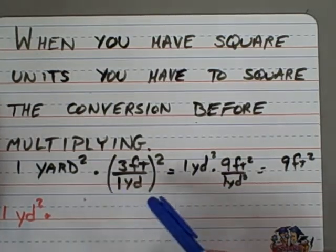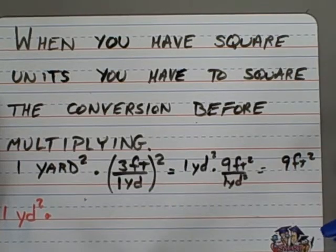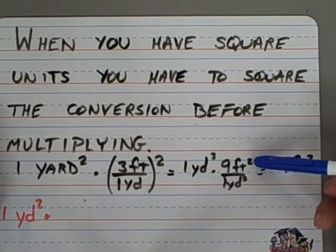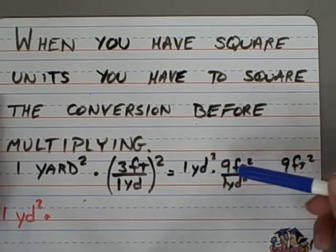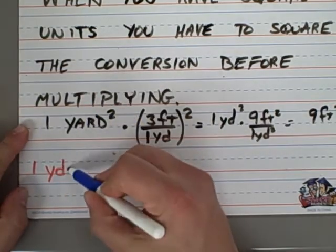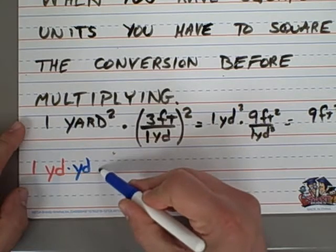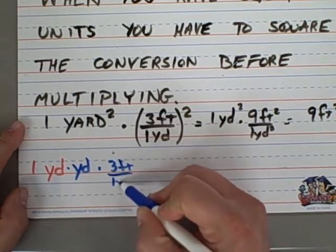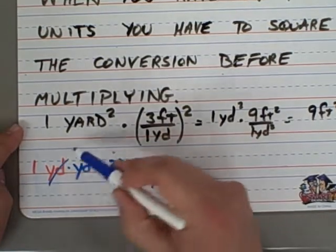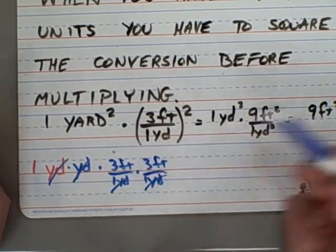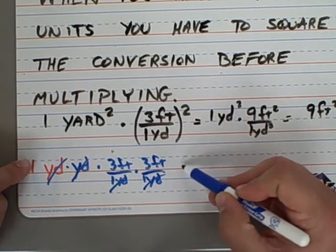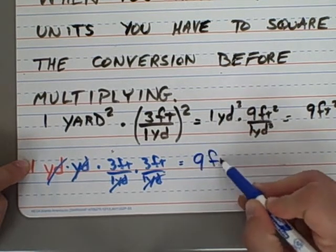This can be written as 1 yard squared is equal to 3 feet per yard squared, which would then be both of these items squared. 3 squared is 9, 1 squared is 1. So you'd end up with 9 square feet over 1 square yard. Multiplying those, you end up with 9 square feet. That could also be written as 1 yard times a yard times 3 feet per yard times 3 feet per yard. Because we have to cancel out 2 of these yards, so we have to multiply by 3 twice. Which gives us 1 times 9, which still ends up with 9 feet squared.